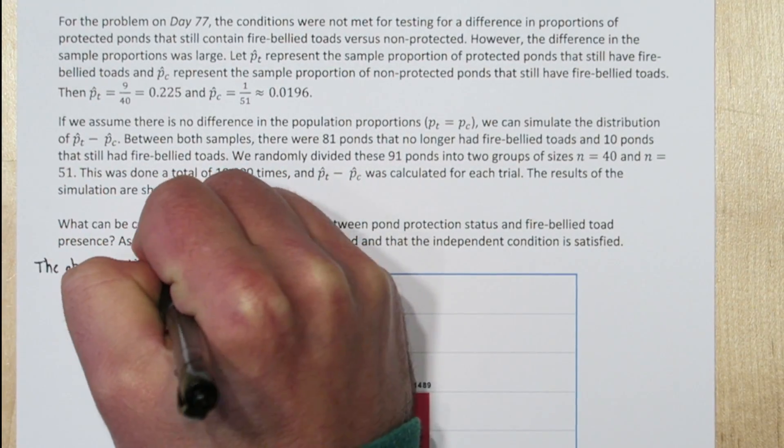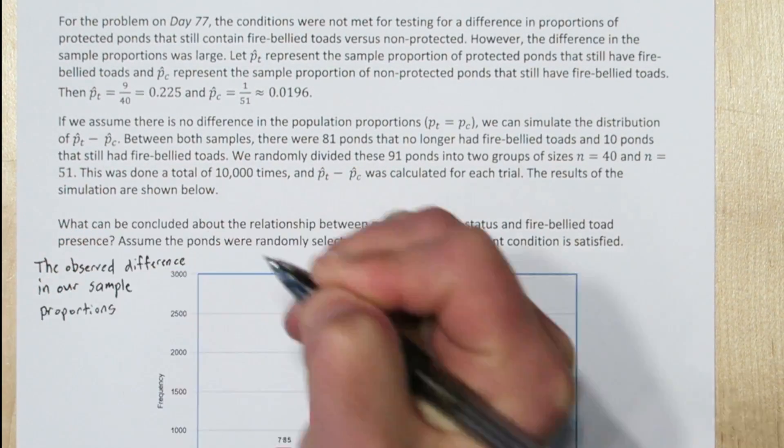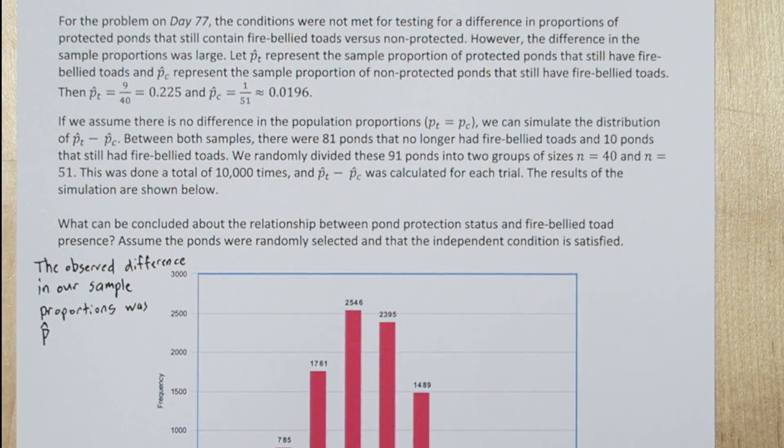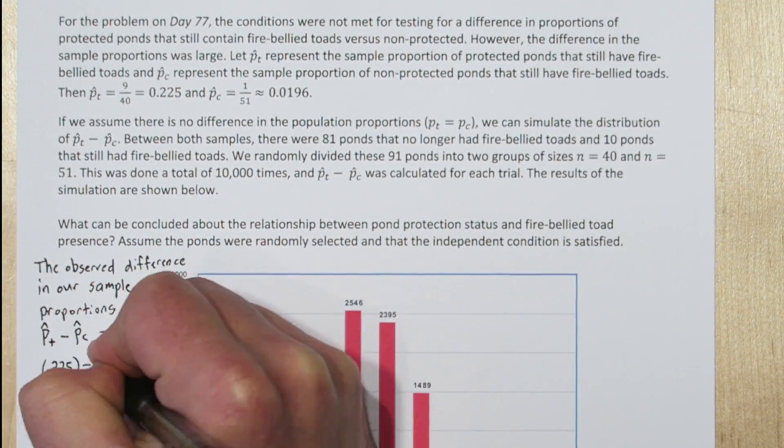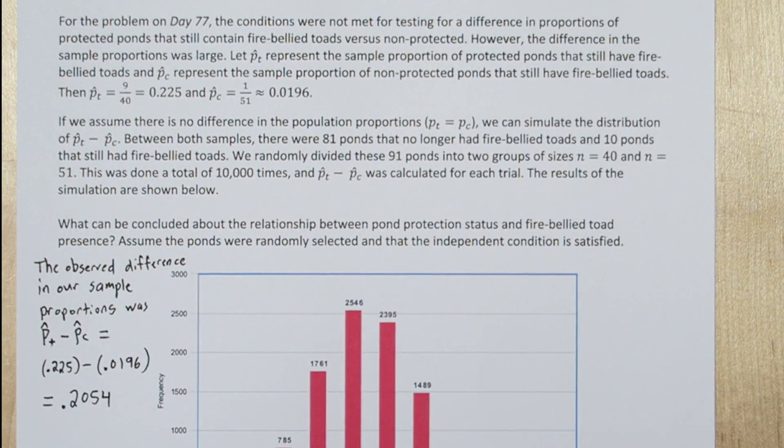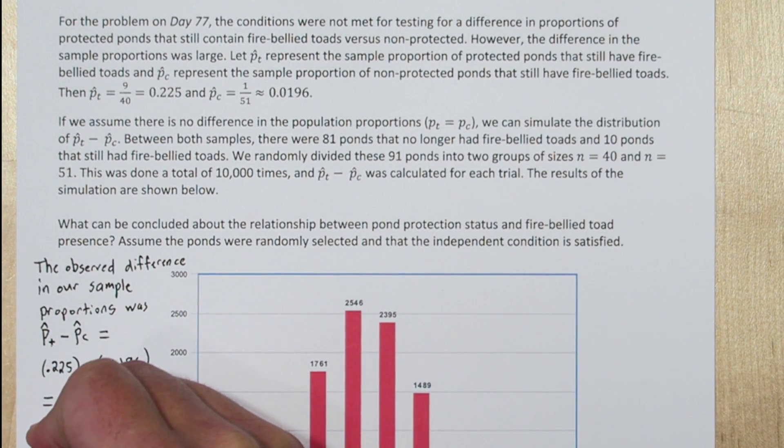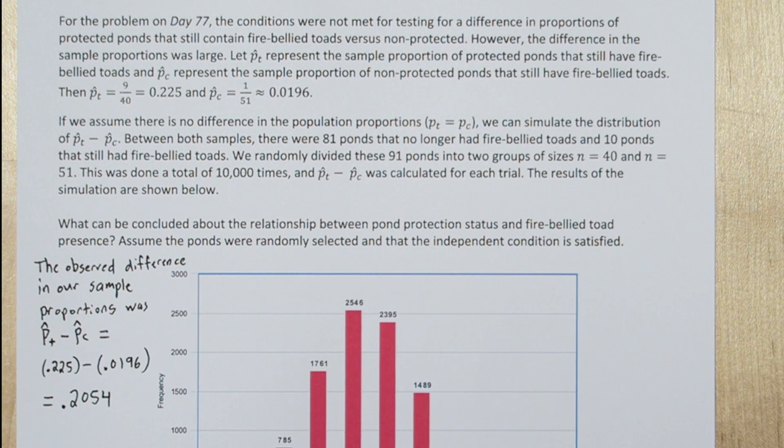22.5% of the protected ponds still had fire-bellied toads present, where only about 1.96% of the non-protected ponds still had fire-bellied toads. So the difference in our sample proportions was 0.2054.